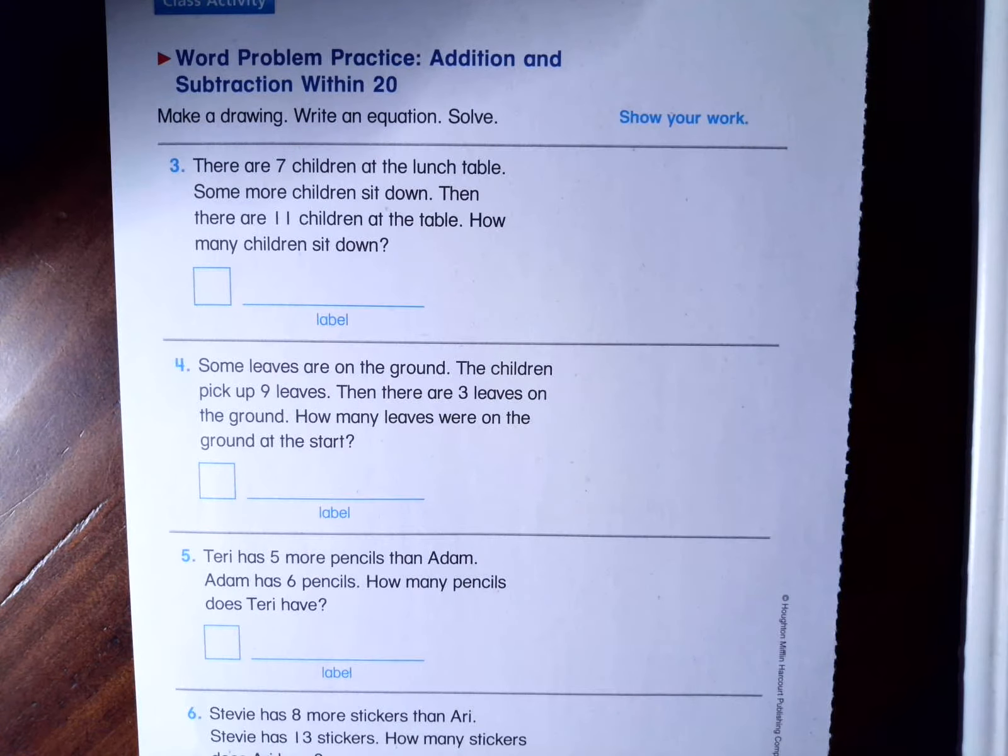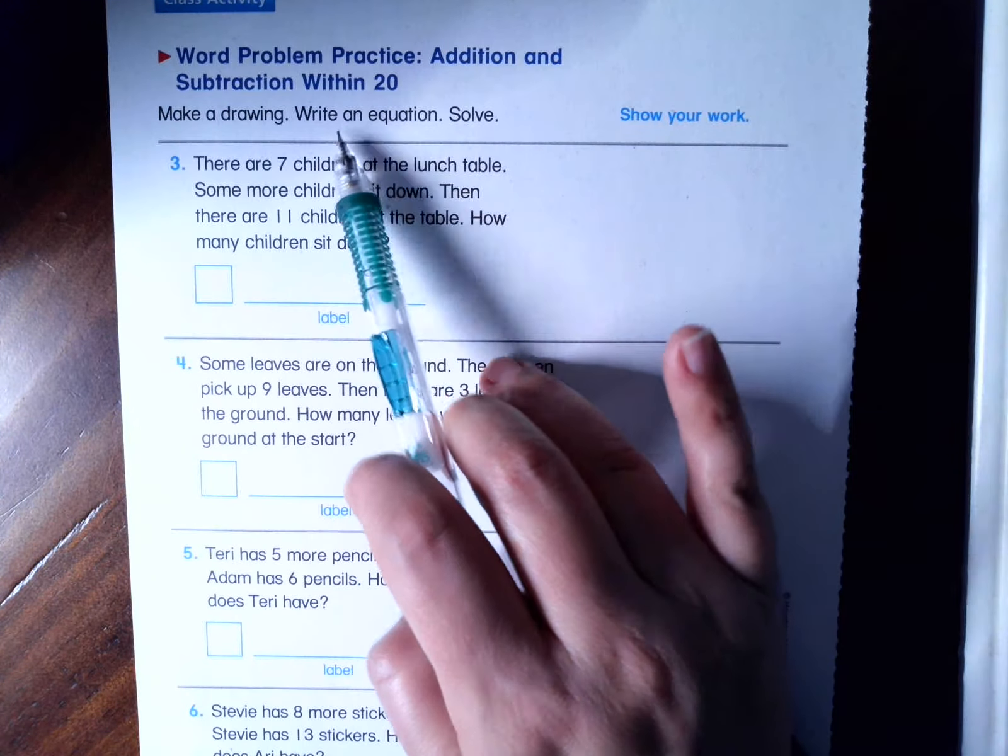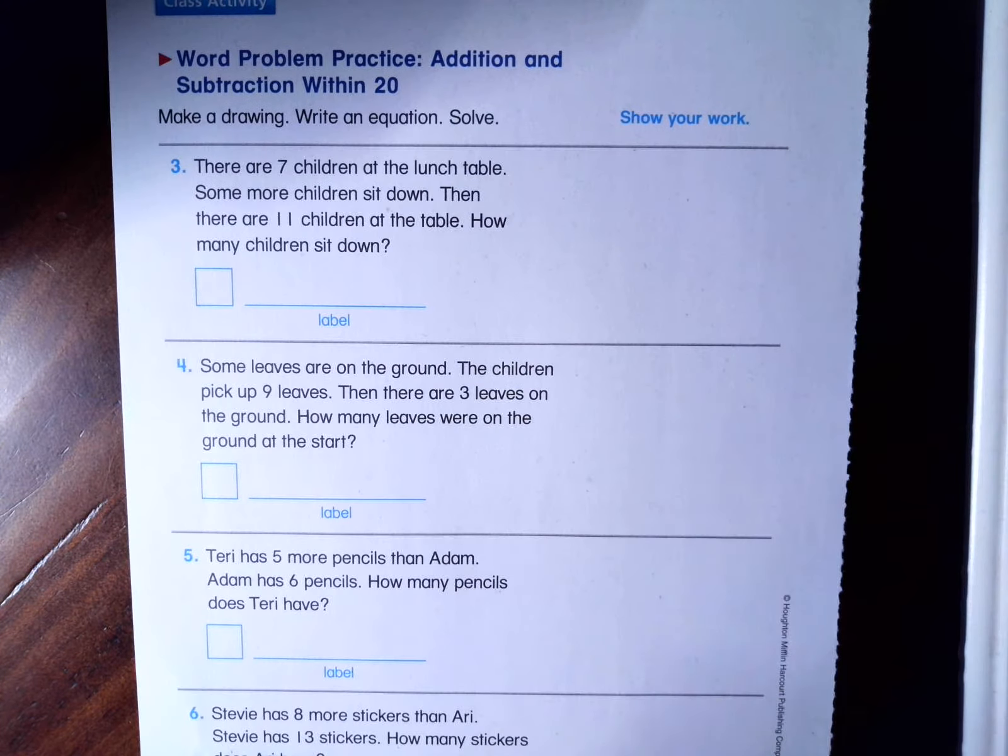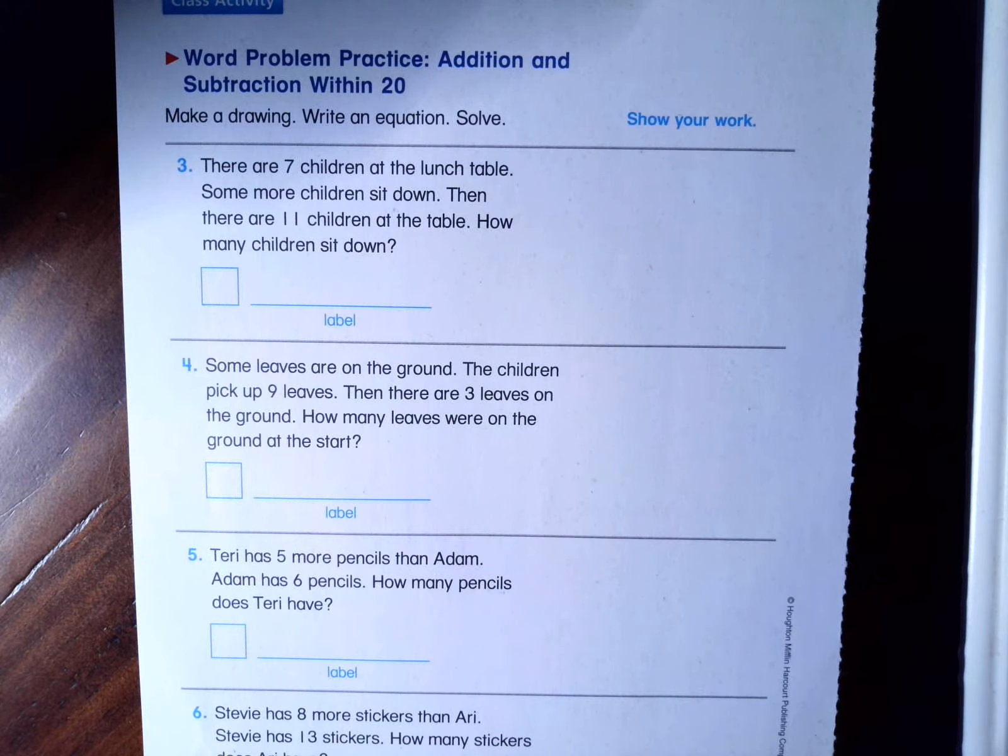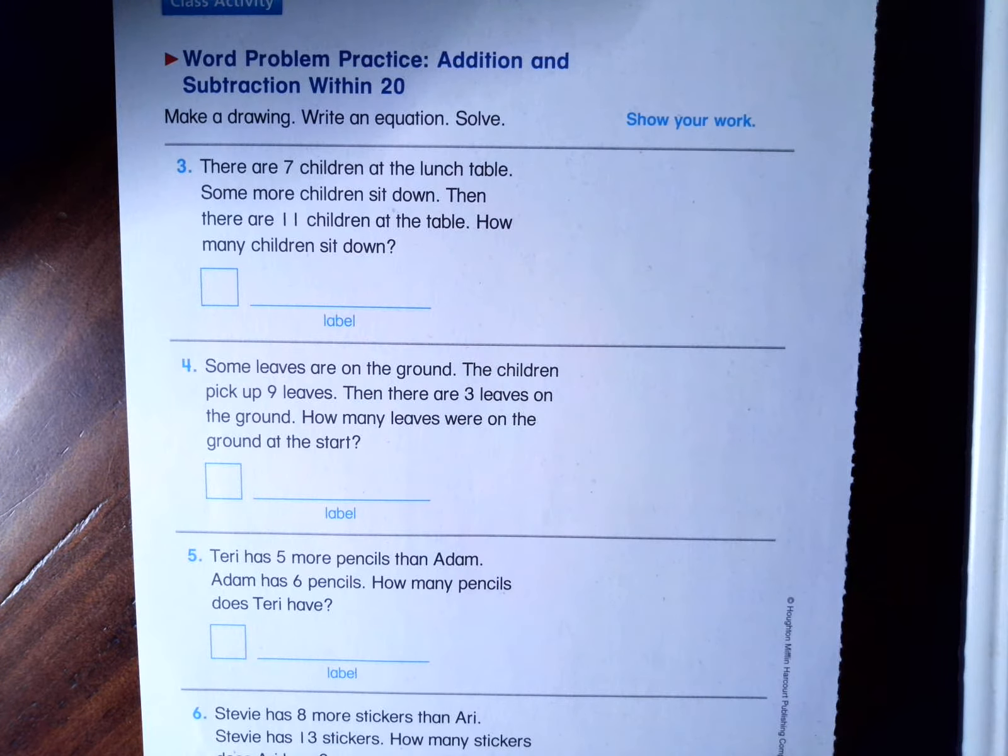So some of these problems look easy, but I'm telling you some of them are tricky. They are some of the more complicated word problems, so we are going to do them together today. It says, make a drawing, write an equation, and solve. Now all of the actual adding and subtraction is pretty simple because it's all 20 or less, but these word problems are actually a little bit confusing.